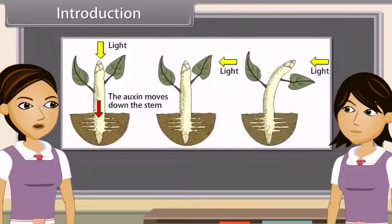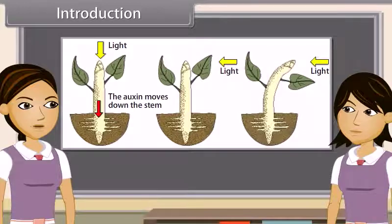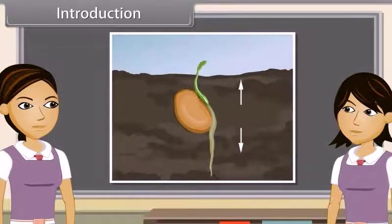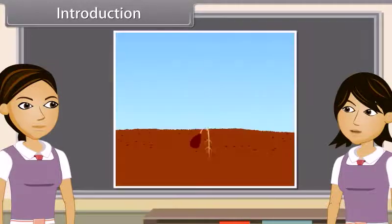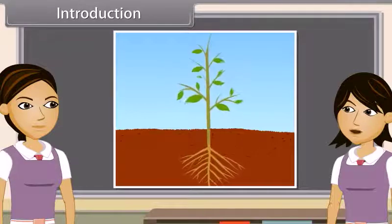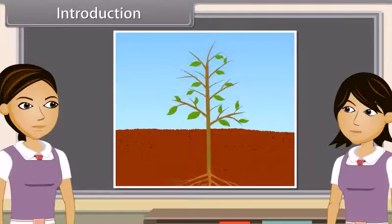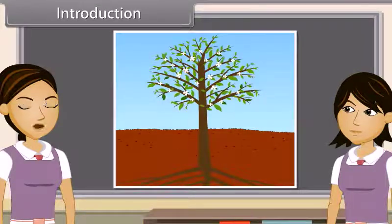We can also say that the hormones in plants coordinate their behaviour by affecting the growth of a plant. The effect on growth of the plant can result in the movement of a part of a plant like root or stem. The plants respond to various stimuli very slowly by growing.